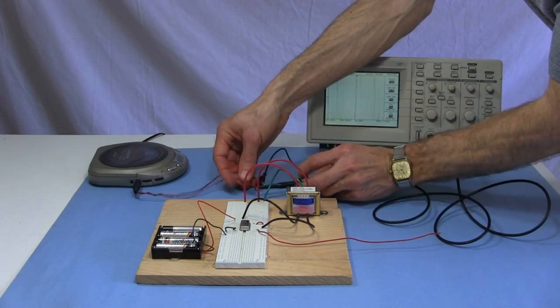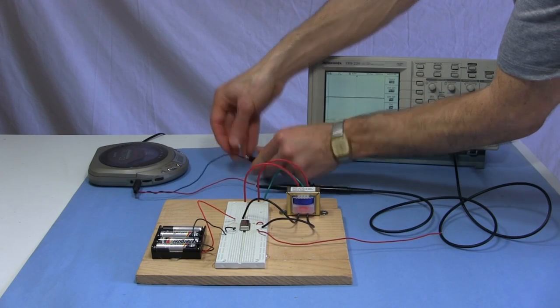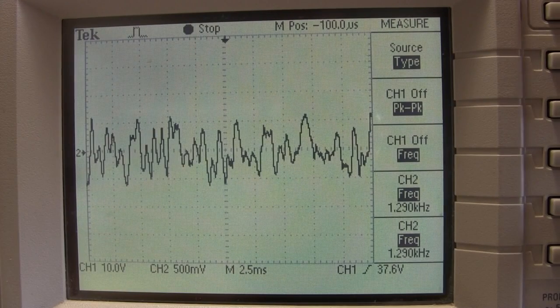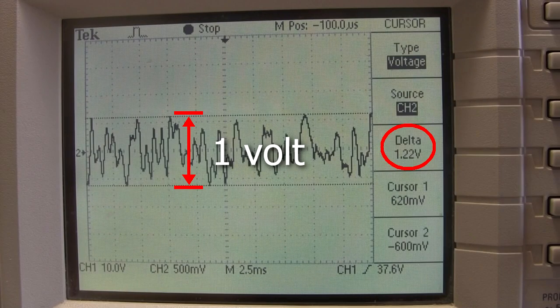Once again, I disconnect the CD player from the transmitter and look at just the CD player's output. So it's just this part of the circuit, and I'm looking at the output here. I see the audio wave. Notice the peak to peak voltage is around 1V.